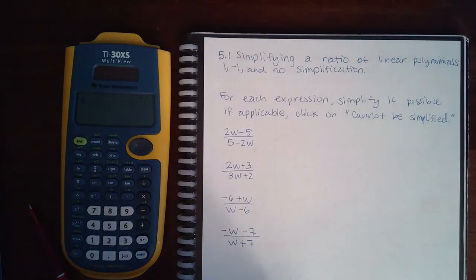Here we have 5.1 simplifying a ratio of linear polynomials: 1, negative 1, and no simplification.